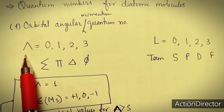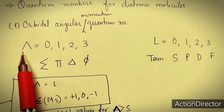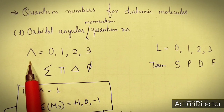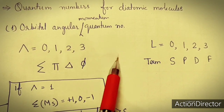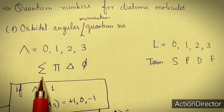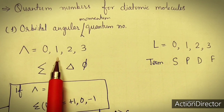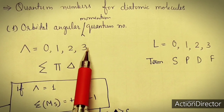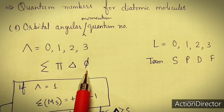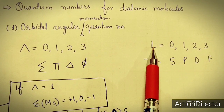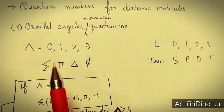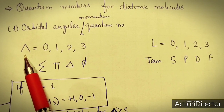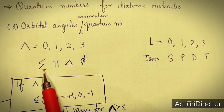In case of diatomic molecules, the orbital angular momentum quantum number is denoted by lambda. Its value may be 0, 1, 2, 3, and so on. If lambda is 0, the term is sigma; if 1, the term is pi; if 2, it is delta; and if 3, the term is eta.